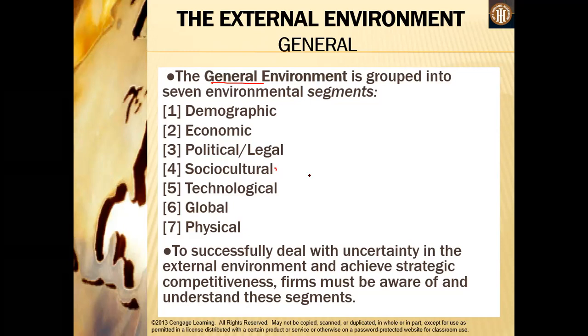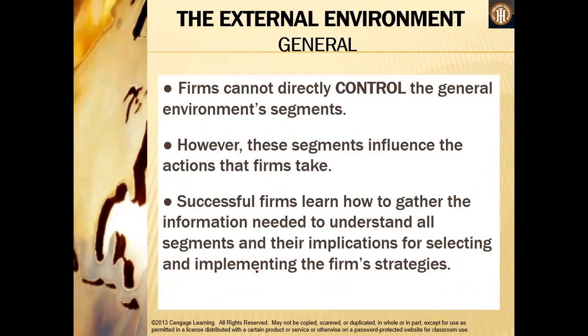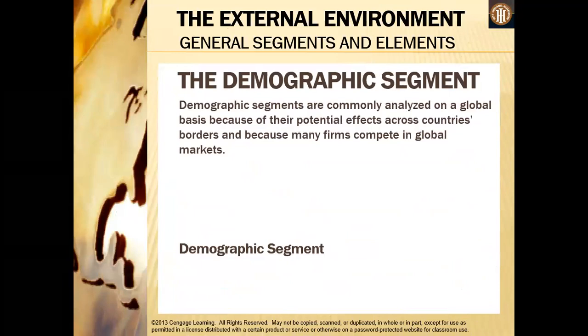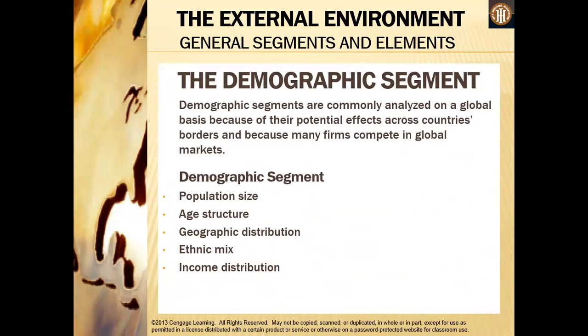Under your general environment, these are items you must take into consideration to successfully deal with uncertainty and achieve strategic competitiveness. For demographics specifically, what is included is population size, age structure, geographic distribution, ethnic mix, and income distribution. These are the items that the firm cannot directly control; however, these segments influence the actions that firms take, and companies should learn how to identify implications so they can successfully strategize.